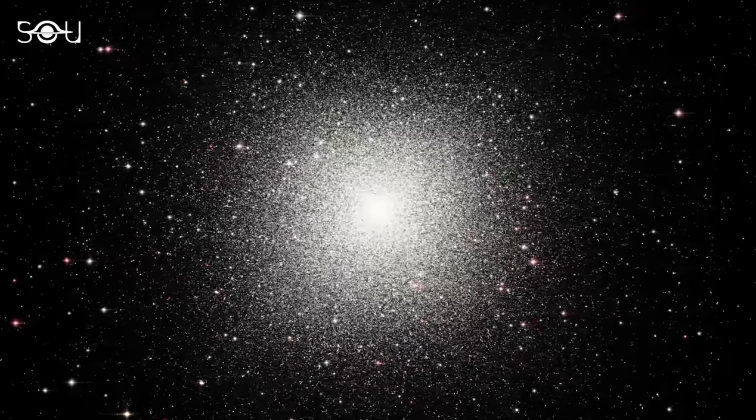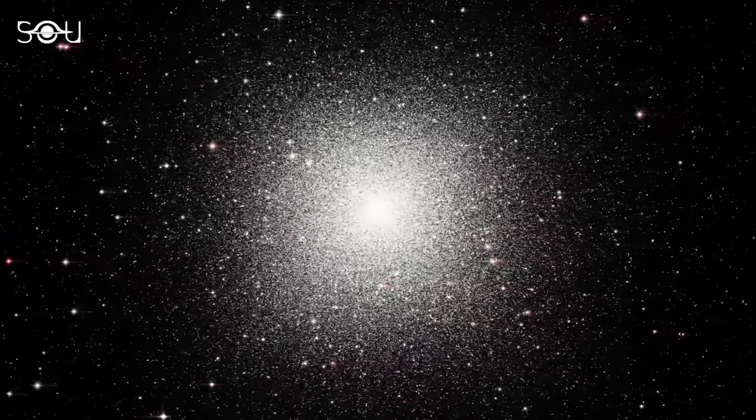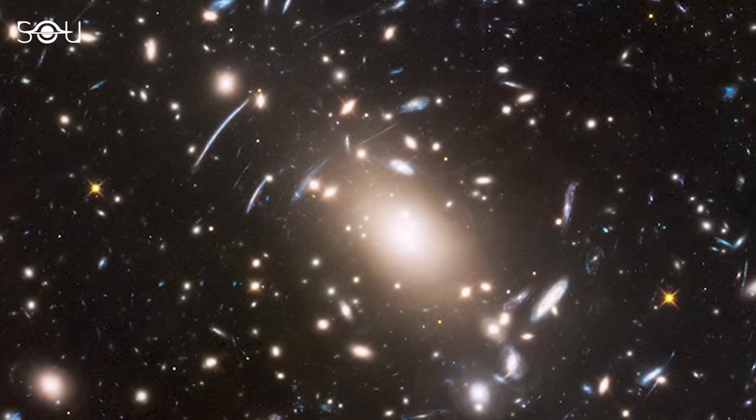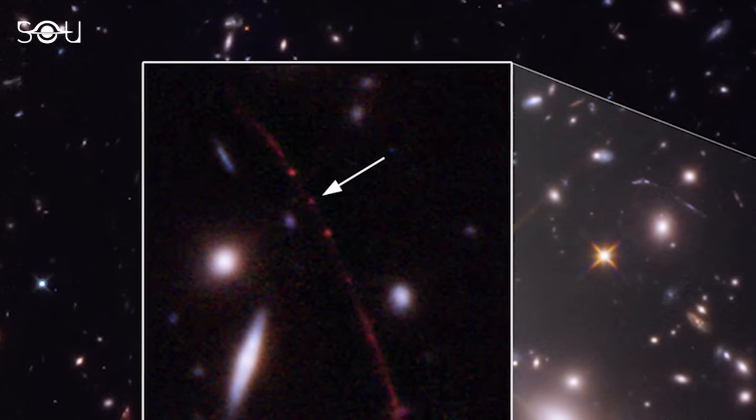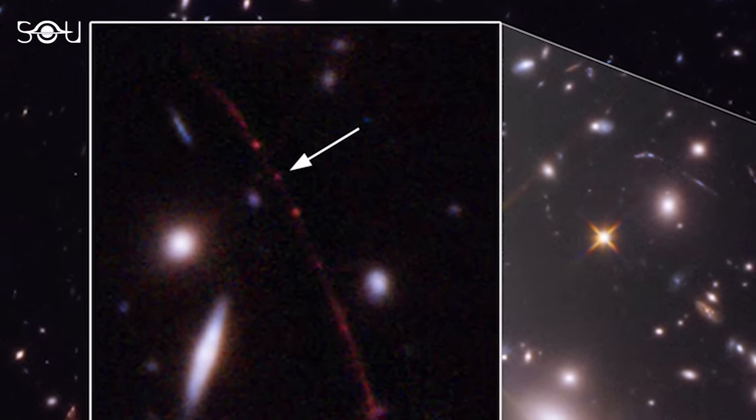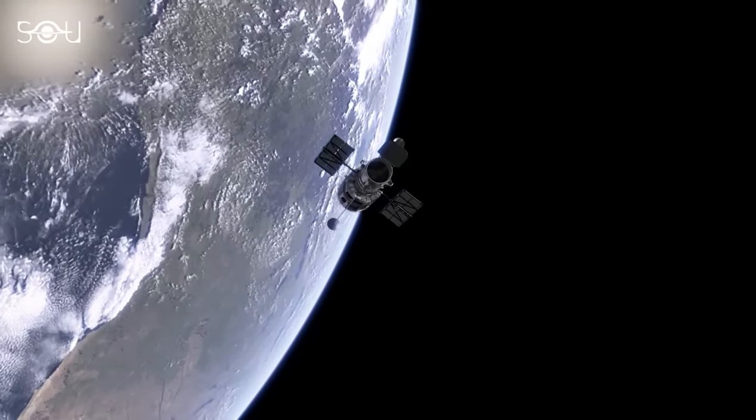So far, the smallest objects observed at these distances were star clusters, all inside faraway galaxies. But Earendel is different. It's the first single star we've seen within the first billion years of the universe. Astronomers found it by chance, using the Hubble Space Telescope.